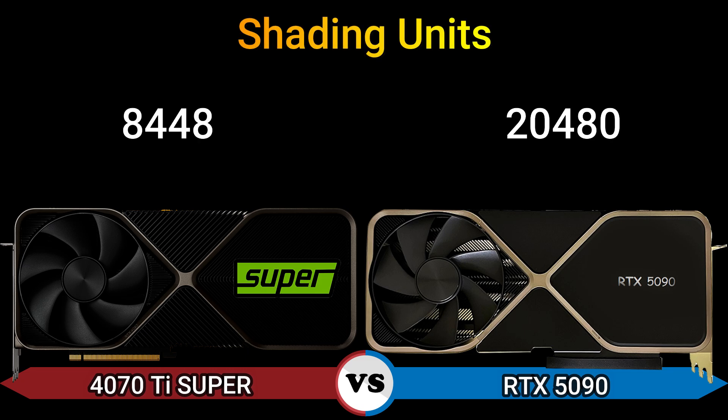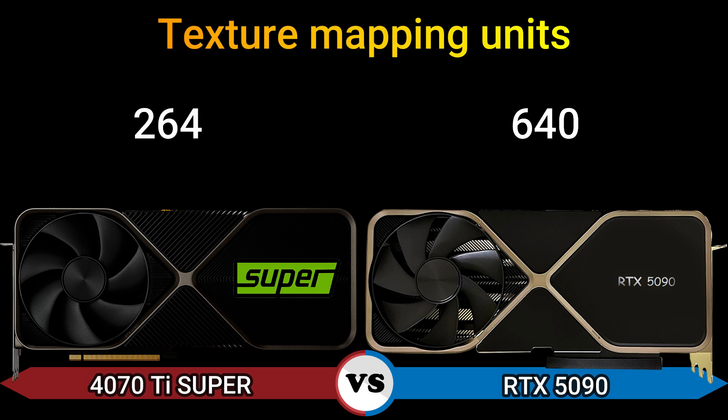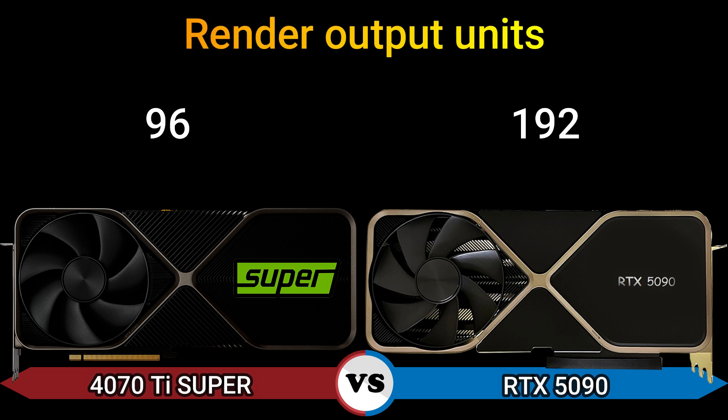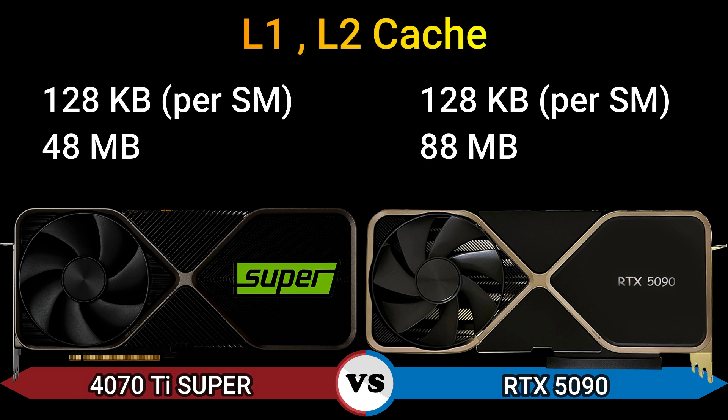Shading units: 8,448 and 20,480. Texture mapping units: 264 and 640. Render output units: 96 and 192.